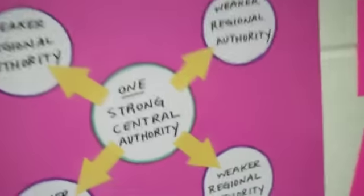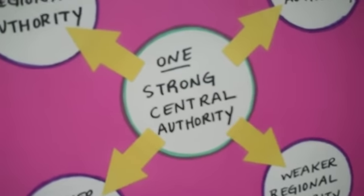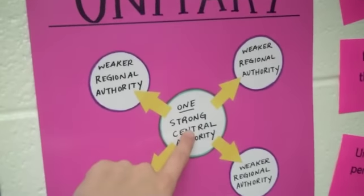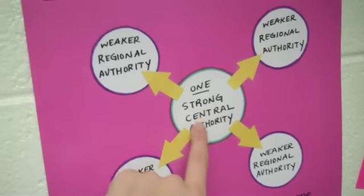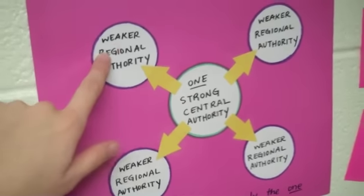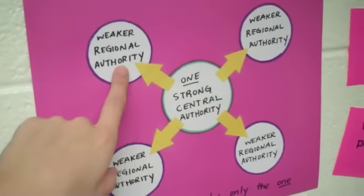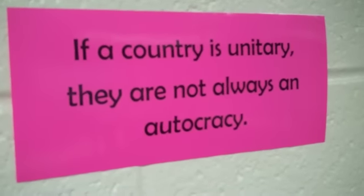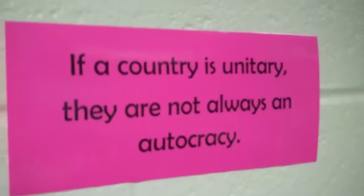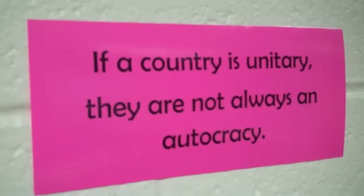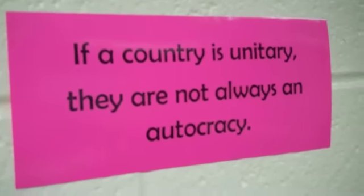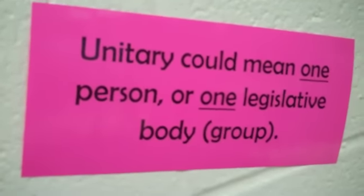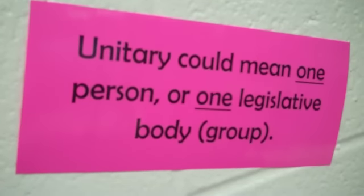In a unitary government, you have one strong central authority — that's where all the power is. However, sometimes in a unitary government the central government is willing to share power with regional authorities, but those regional authorities don't really have any real power. Any power they do have has been given to them by the central authority and can be taken back in a second. A country that is unitary is not always an autocracy — sometimes they might be, but not always. Unitary could mean one person, or it could mean one legislative body, which would technically be a group.